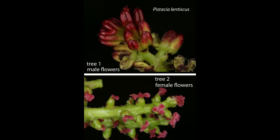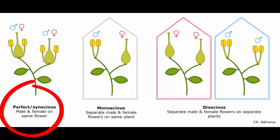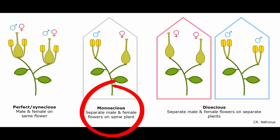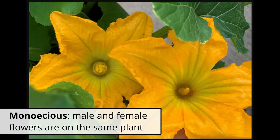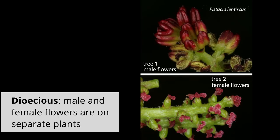I mentioned earlier that you can have separate male and female flowers. When you have a perfect flower, you have male and female parts on the same flower — that's called synoecious. If the male and female parts are on separate flowers, you have two potential arrangements. The first is called monoecious, where the separated male and female flowers are on the same tree — think of mono meaning one. The second arrangement, called dioecious, is where the separated male and female flowers are on separate trees — think of di meaning two.